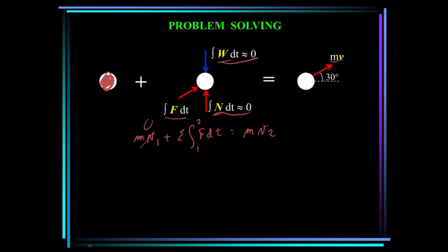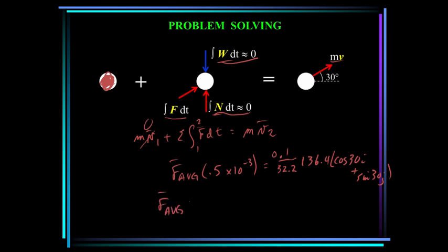The initial velocity is zero. I'm going to say that the average force acting on the ball is a constant. So we can say the average force times dt. Remember the time was half a millisecond, so that would be 0.5 times 10 to the minus 3. That is equal to the mass, which is 0.1 pound over 32.2 slugs, times the velocity, which we just determined was 136.4 times cosine 30 i plus sine 30 j. These are all vectors. You can solve this for the average force. It's equal to 734 in the i plus 424 in j, and that is pounds.